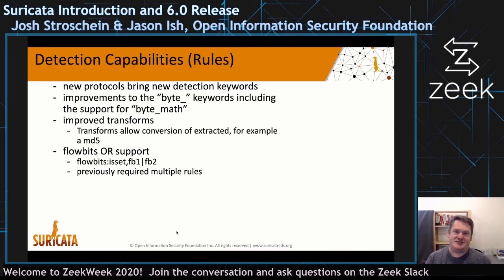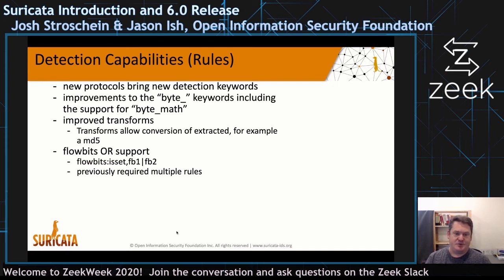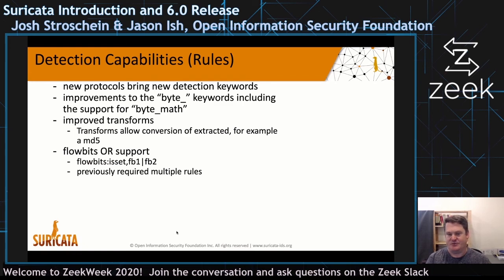In terms of detection capabilities — for us that means rules. Every new protocol, we try to bring new detection keywords. We've improved the byte keywords and support for byte math, which come over from the Snort rule language. We've improved transforms — a way to take a buffer of data extracted from a stream and perform a transformation, such as converting to an MD5 that could then be matched against a list of MD5 sums. And for flow bits, we've added ORing so you can check if one of two flow bits is set — which previously required multiple rules.